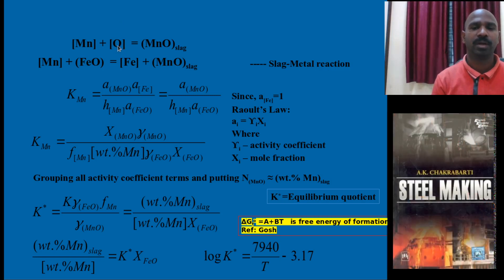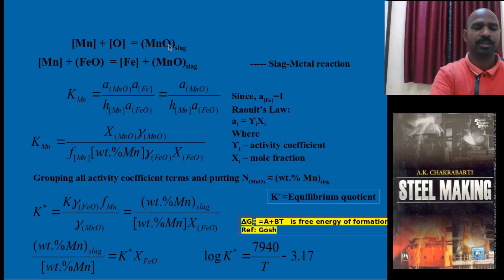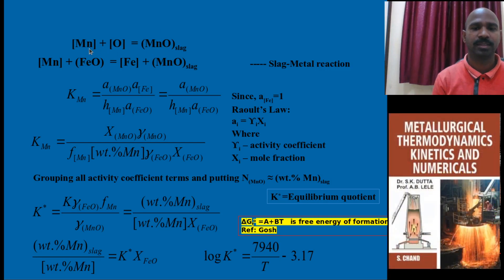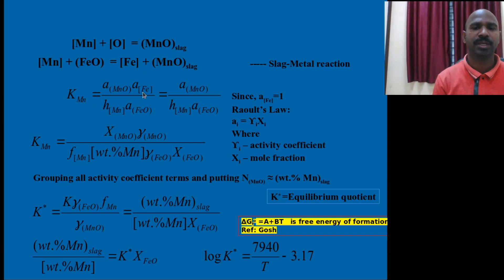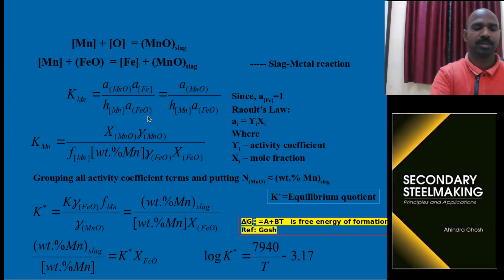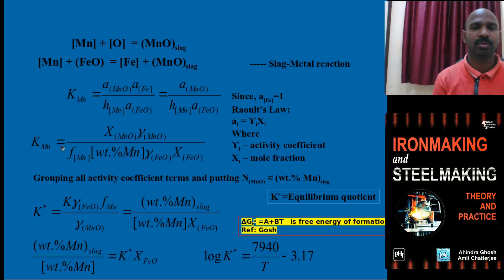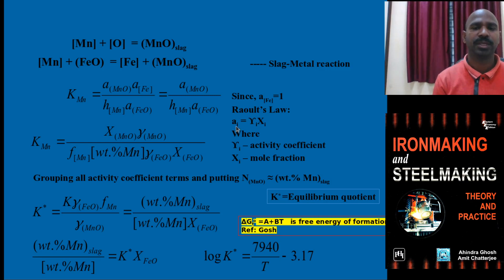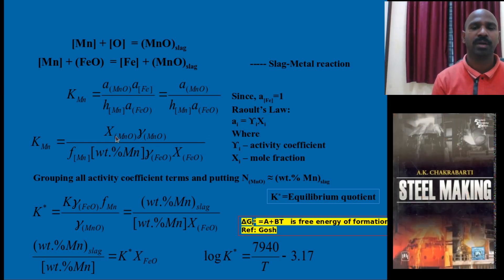This involves oxygen dissolved in the molten metal. Applying Raoult's law, for the equilibrium: K of MnO divided by K of Mn into K of MnO. For the slag-metal reaction, the equilibrium involves A of MnO and A of FeO. Since A of FeO is equal to 1, it simplifies. A of MnO in slag is expanded as per Raoult's law: gamma_i times X_i. Similarly for FeO: gamma_i times X_i. For Henry's law, the activity coefficient is also expanded.